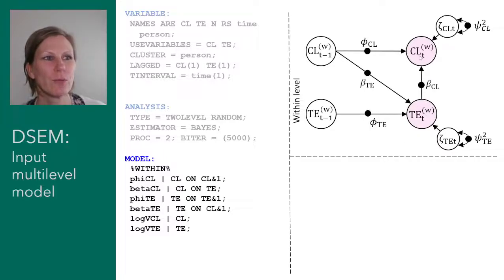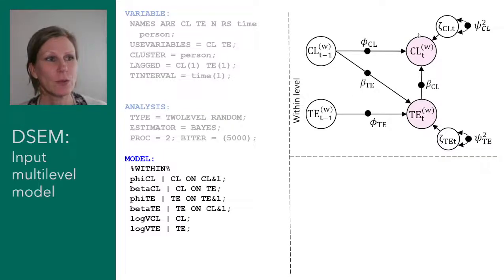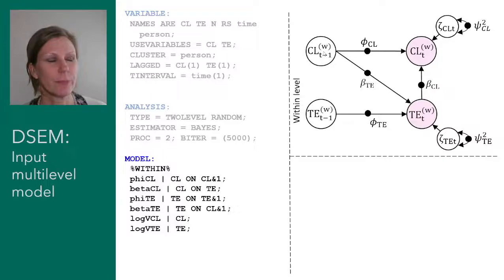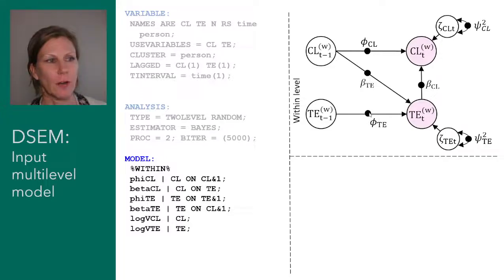We were specifying a model for the variables closeness and tension — how close do you feel to your partner right now, and how much tension was there in your relationship today. Closeness is regressed on itself yesterday, which is the autoregressive parameter, and also on tension today, which is the cross regression. Tension is regressed on tension yesterday and closeness yesterday.